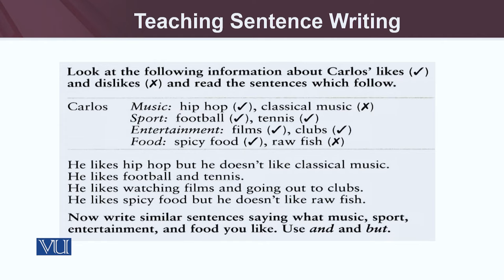For example, whether Carlos likes music — hip-hop or football, classical music, tennis, films, clubs, or spicy foods. If you look carefully at this slide, we have well-formed sentences written with the use of 'and' and 'but.' He likes hip-hop, but he doesn't like classical music. He likes football and tennis. He likes watching films and going out to clubs. He likes spicy food, but he doesn't like raw fish.